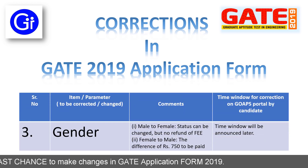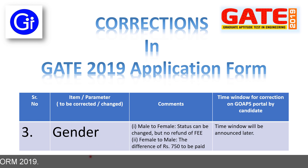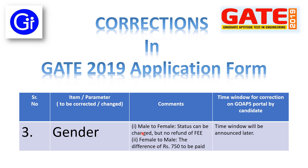The third parameter to be corrected or changed is gender. Gender can be changed from male to female and female to male. If you want to change your gender from male to female, the status can be changed, but no refund of fee will be made, because the fee for male is 1500 and for female is 750, so the difference of 750 will not be refunded. If you want to change from female to male, then you need to pay the difference of 750. The time window for correction on the GOPS portal by the candidate will be announced later.